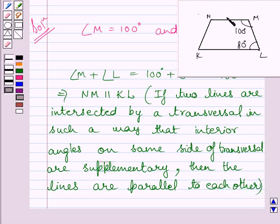Now since NM is parallel to KL, so this quadrilateral is a trapezium. According to the definition of a trapezium, trapezium is a quadrilateral with a pair of parallel sides.